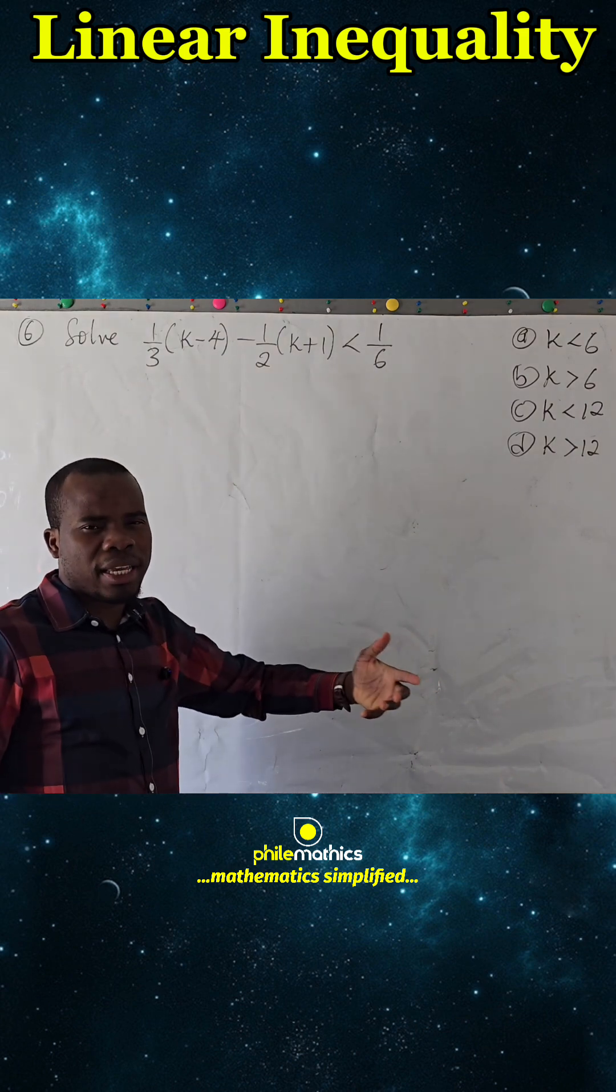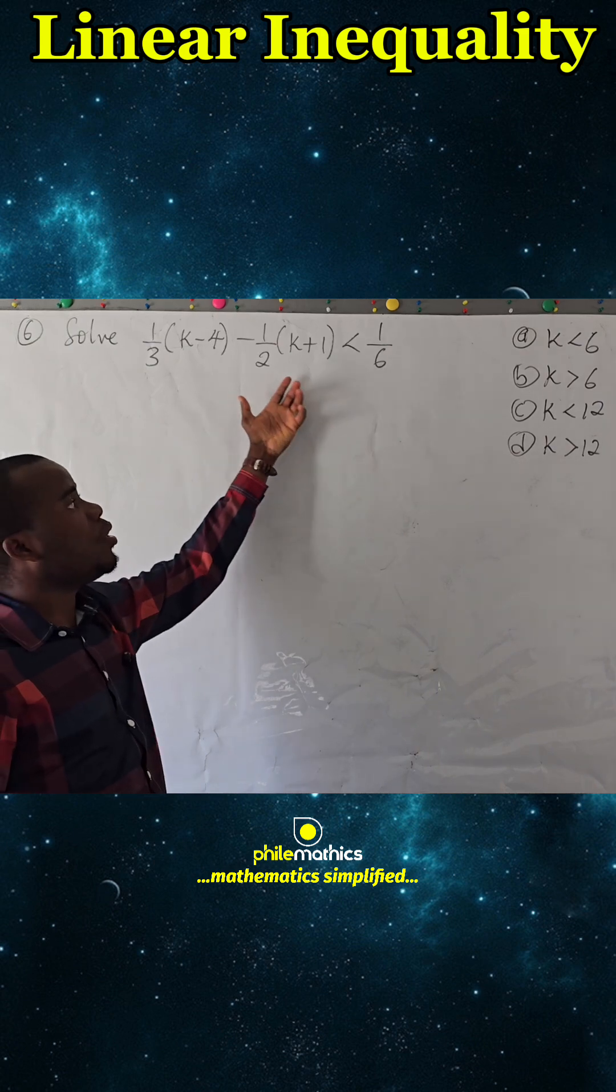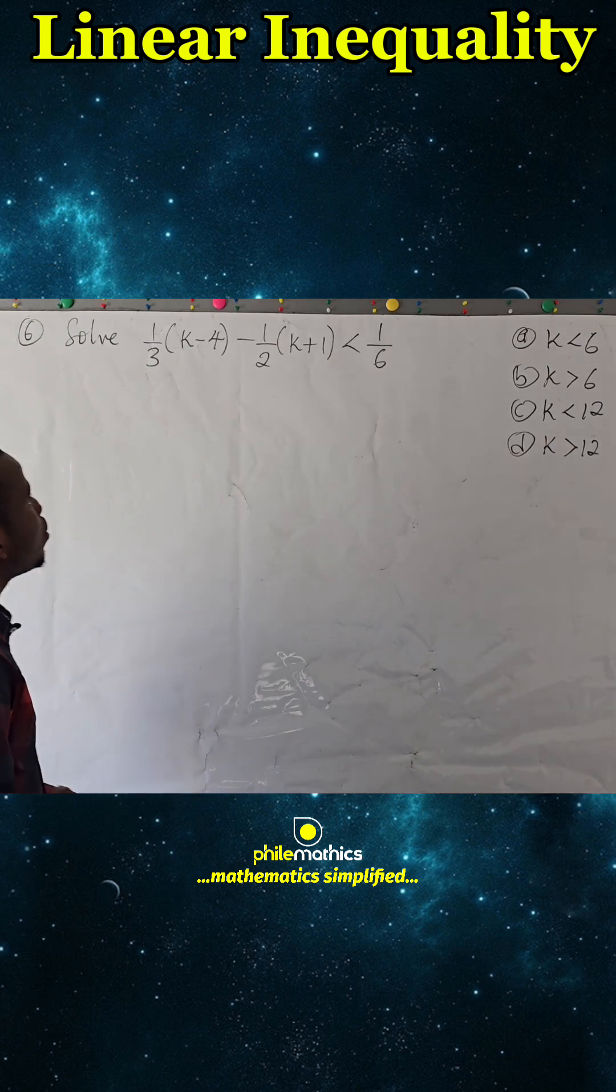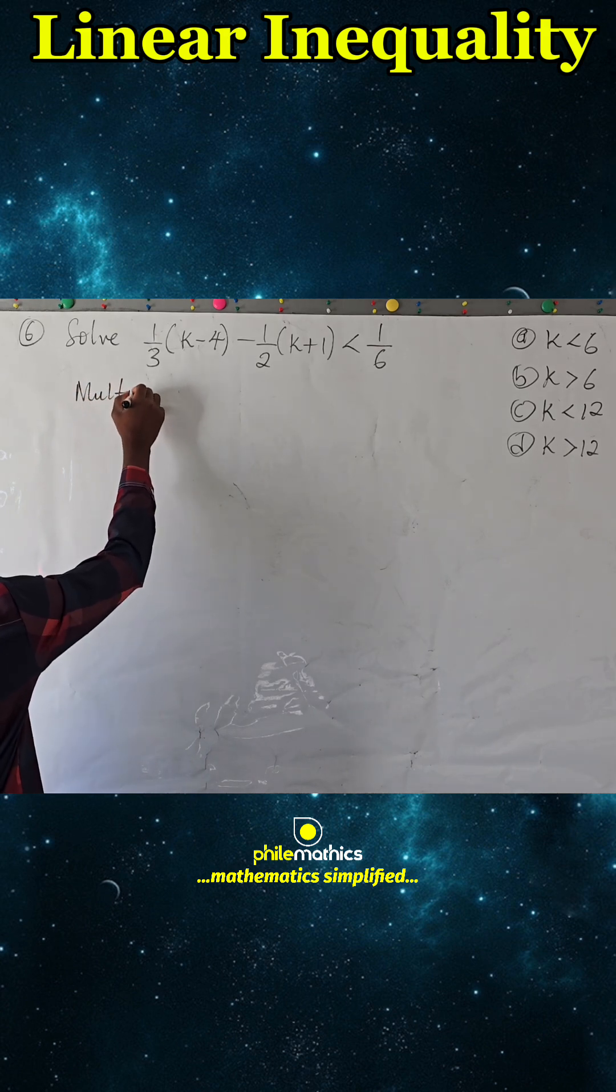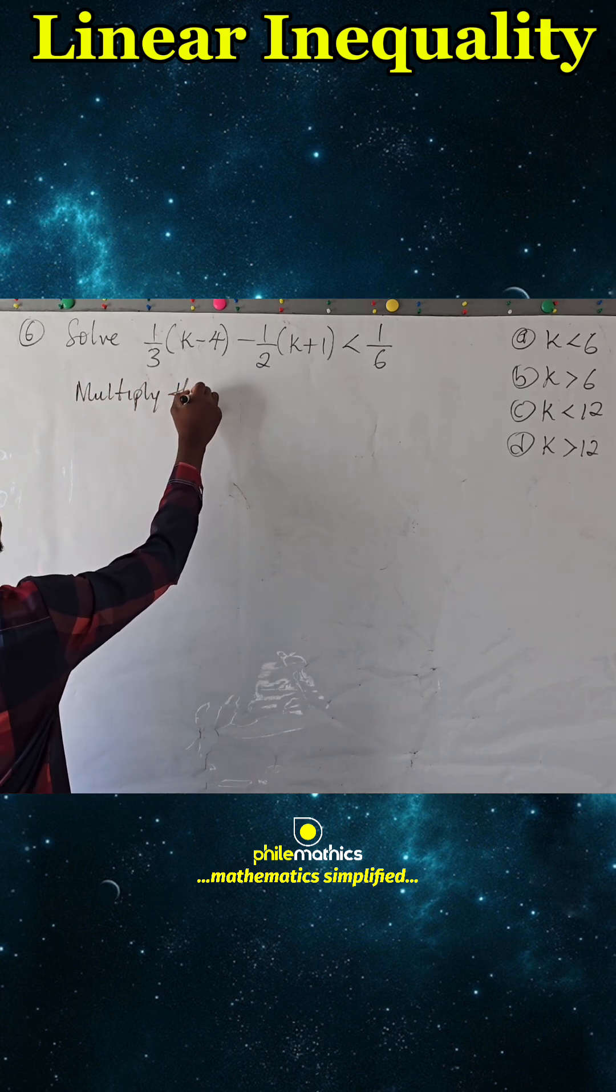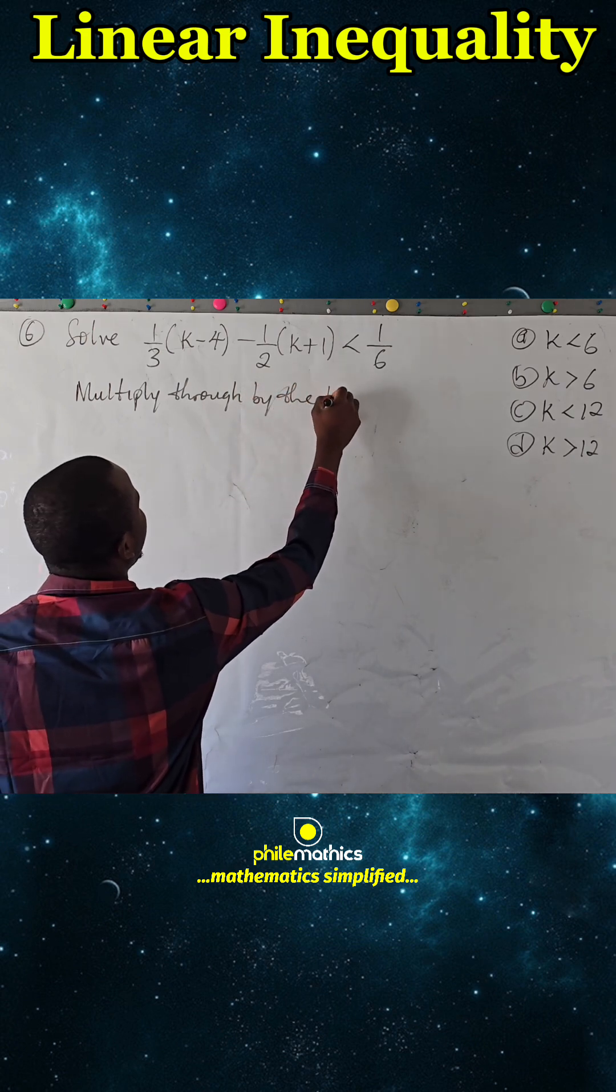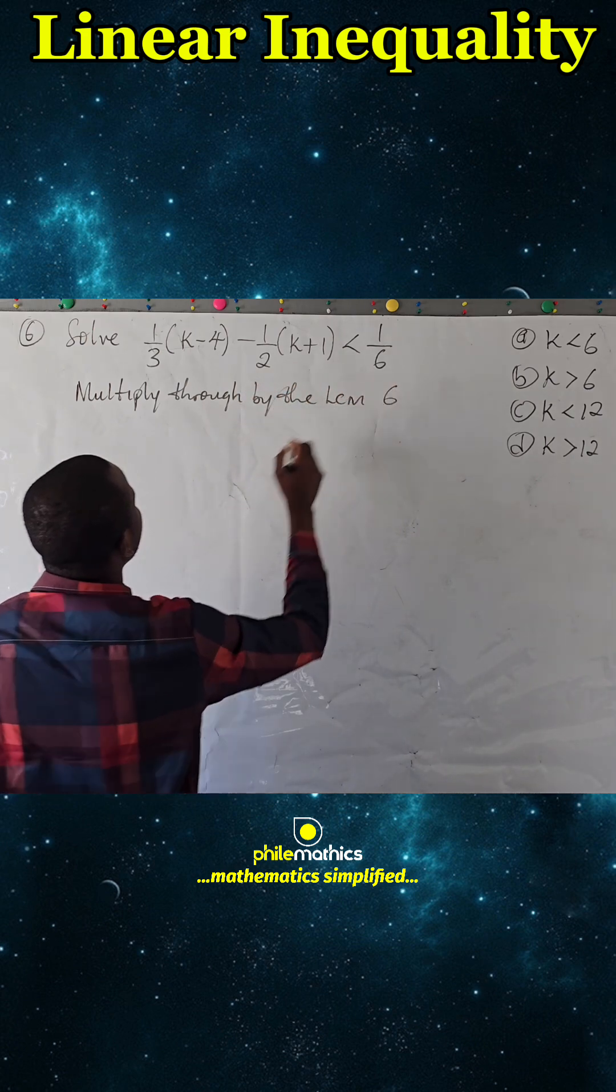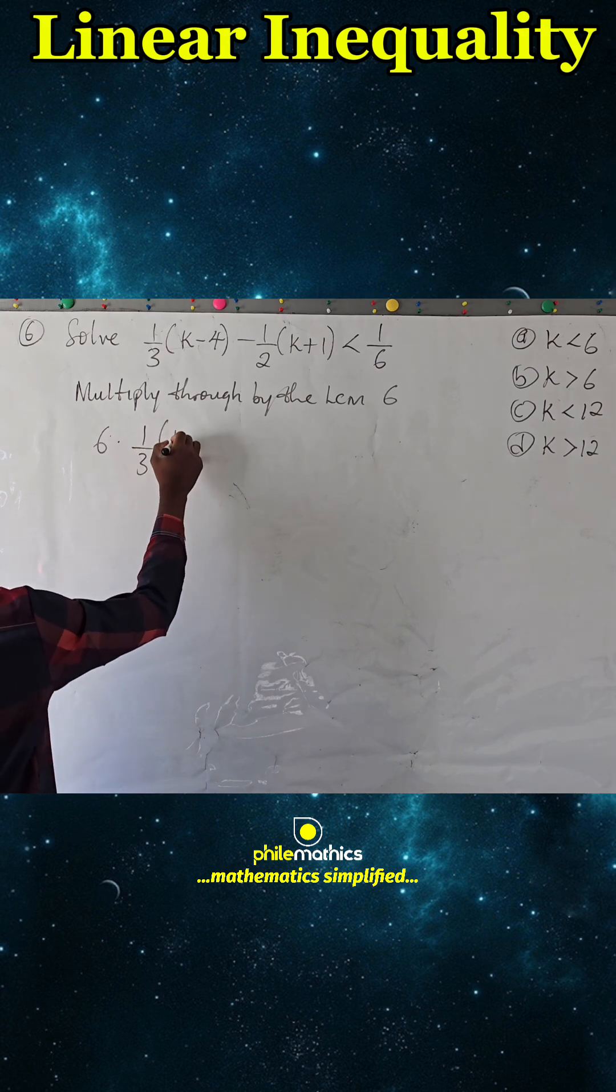We can see that the LCM is 6, so we multiply through by the LCM. We'll have 6 × 1/3(k-4) - 6 × 1/2(k+1) < 6 × 1/6.